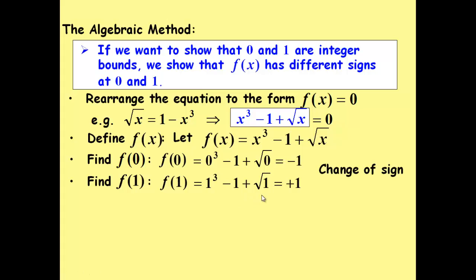And there we see the whole process. The change of sign confirms the fact that there is a solution for alpha between 0 and 1.